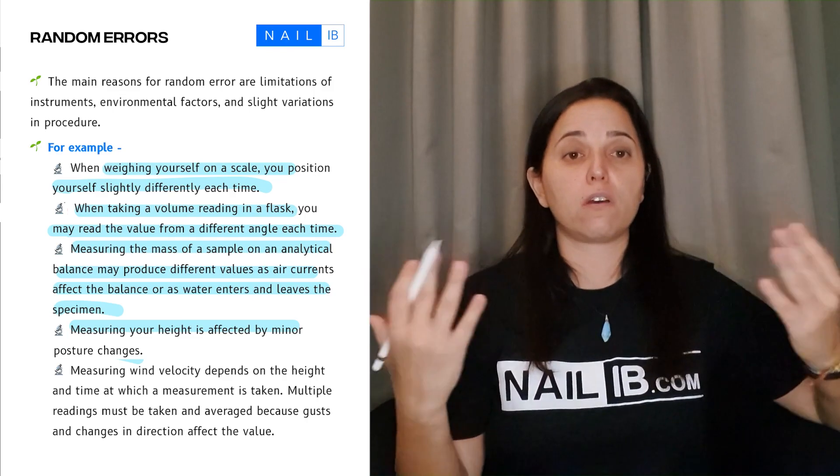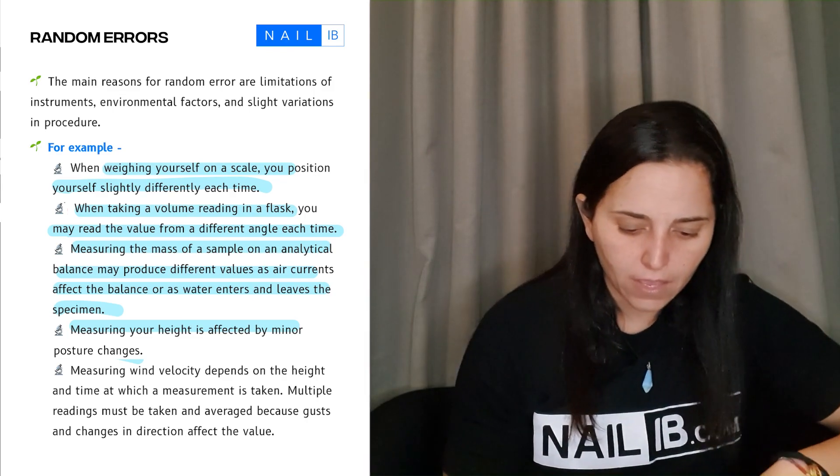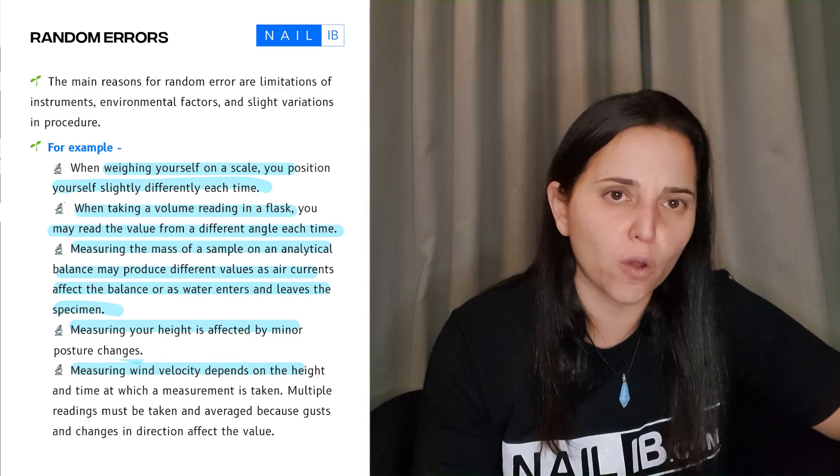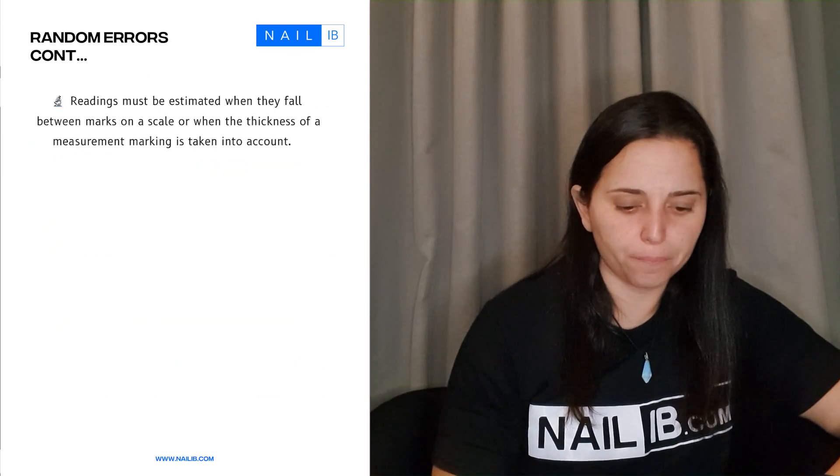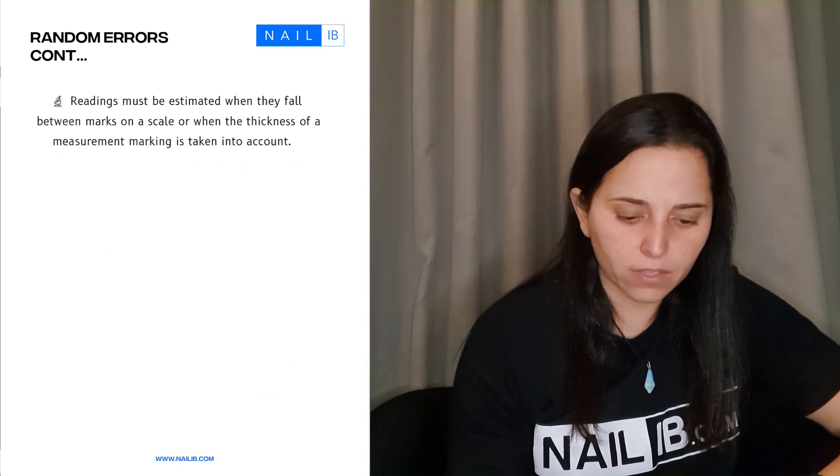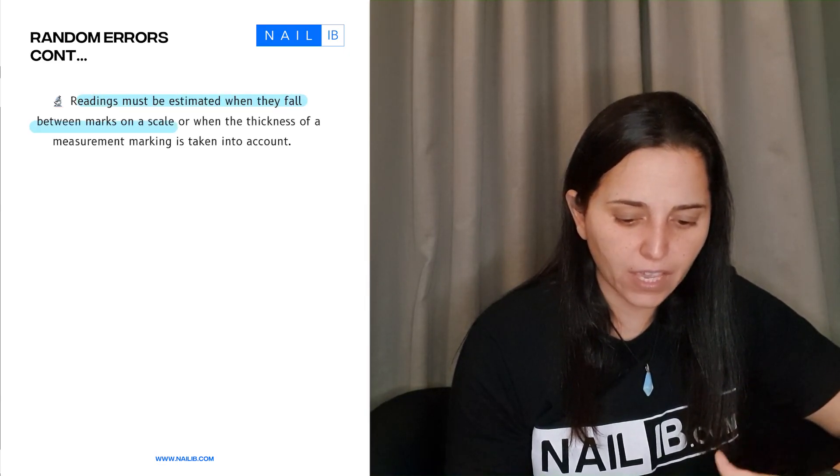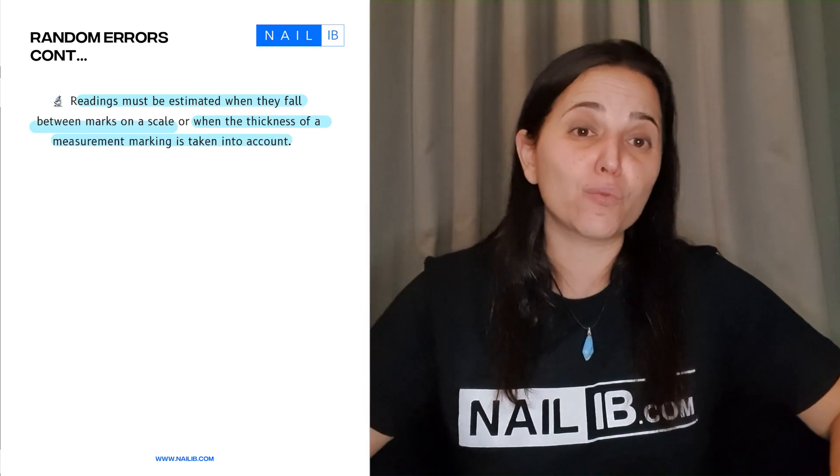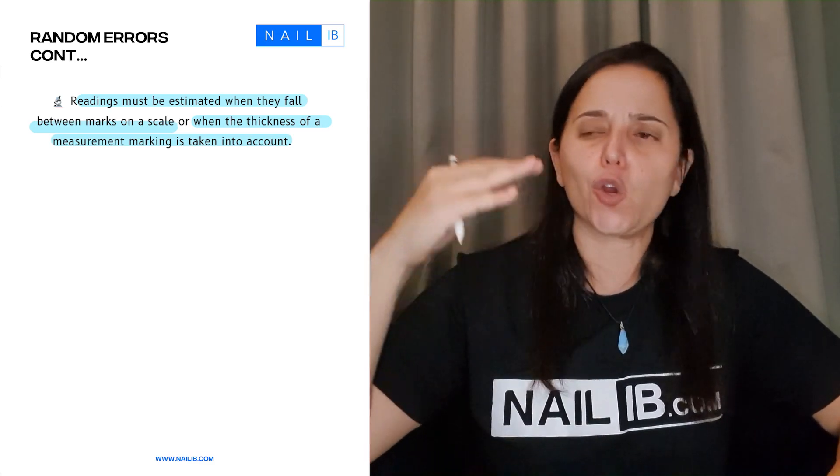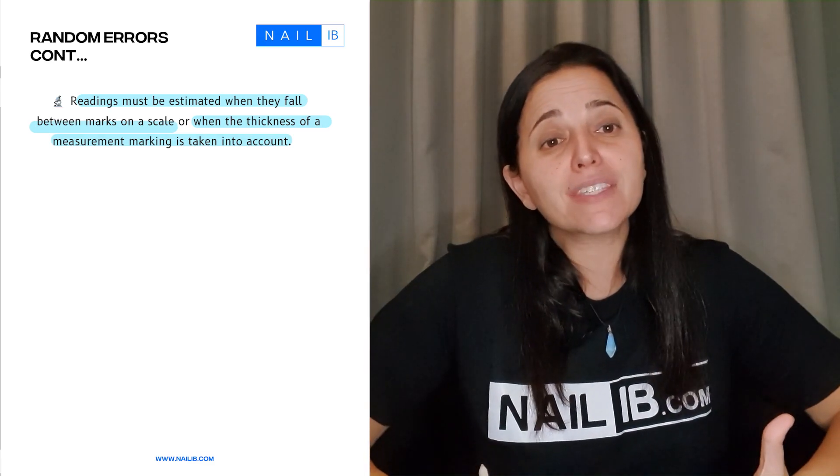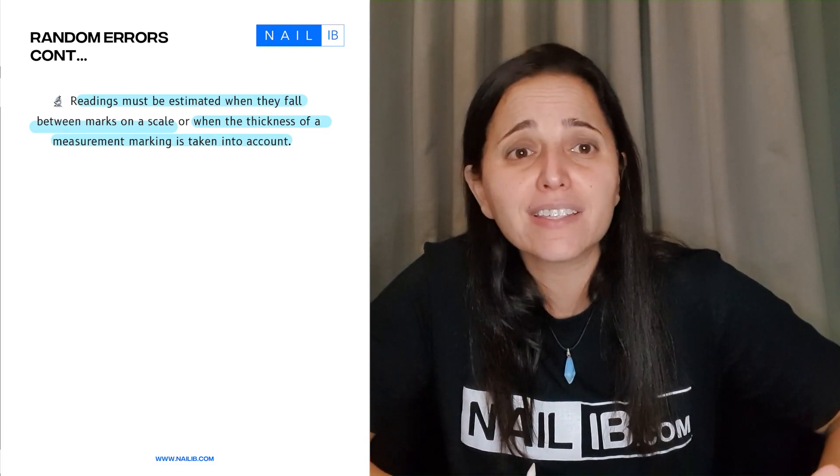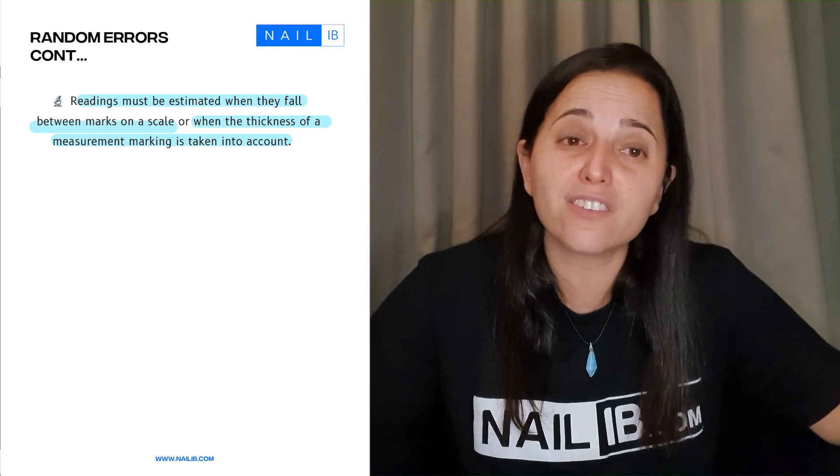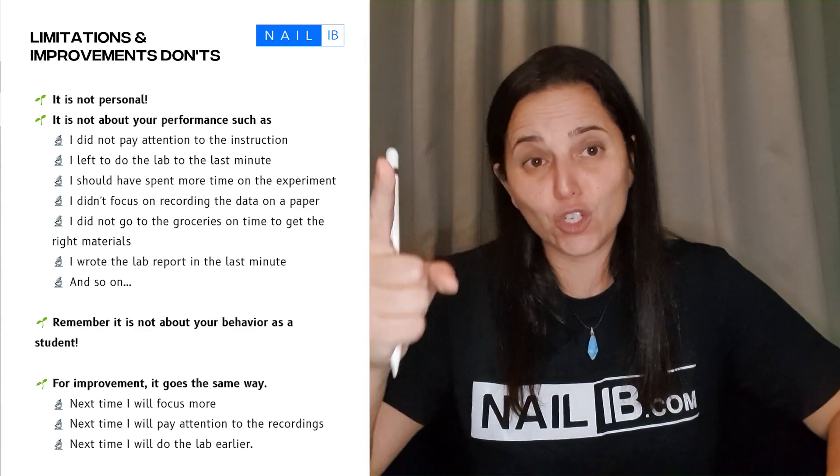Measuring wind velocity: in different times you have different winds, that's also going to affect your results, these are unexpected. Reading must be estimated when the fall between the mark of the scale and the thickness of the measuring marking is taken into account. Sometimes you don't know how to use the ticks of a ruler or beaker or graduated cylinder. You make mistakes, you read by mistake—it was supposed to be reading 26 and you read 25, that's the kind of random errors that might happen. These are things you must put as your limitations.